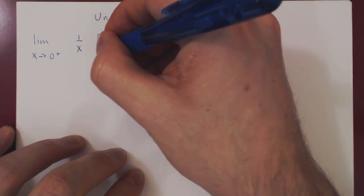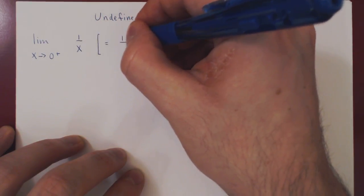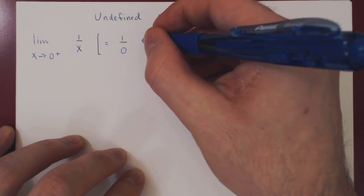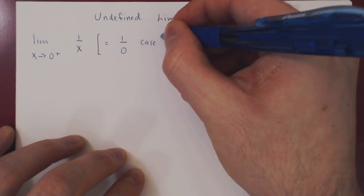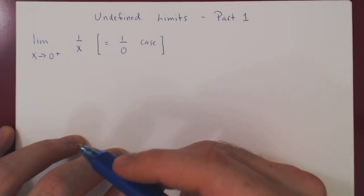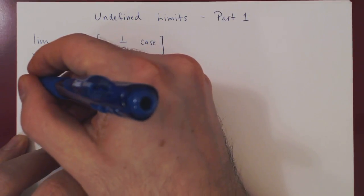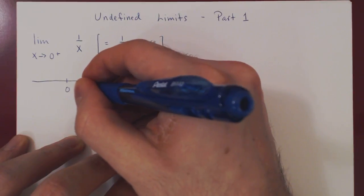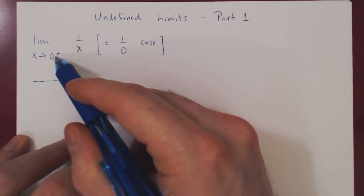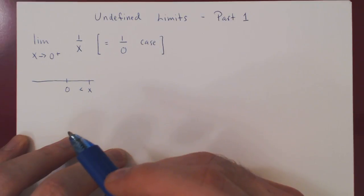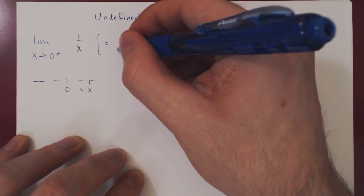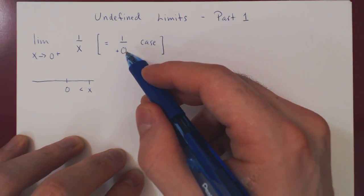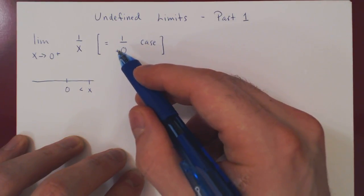Let's look at our case. We have 1 over — now as x approaches 0, clearly x approaches 0. But since x approaches 0 from the right, x will be slightly bigger than 0. So we have 1 over 0-plus, to specify that although it is a quantity shrinking to 0, it is always positive.